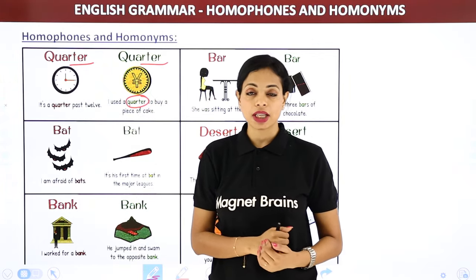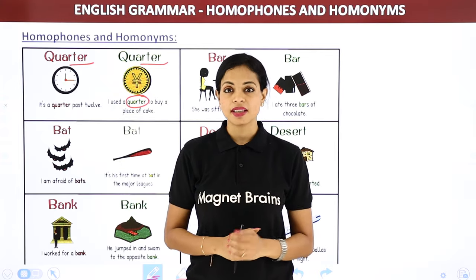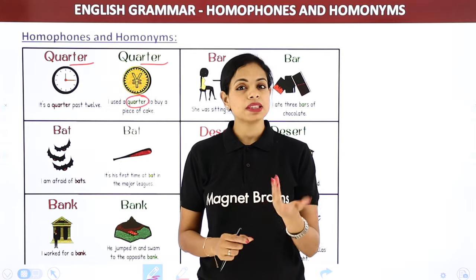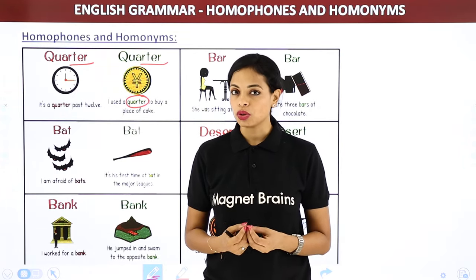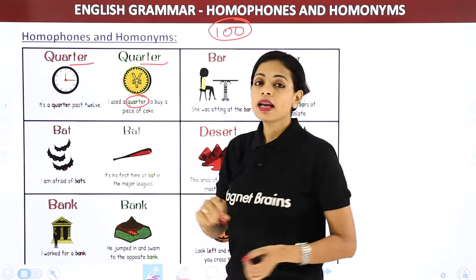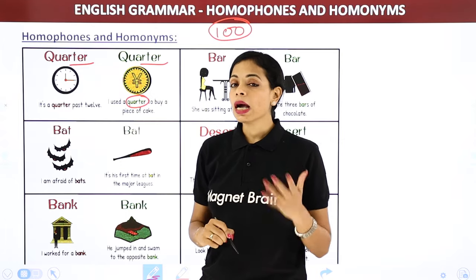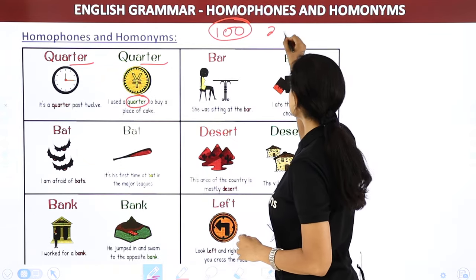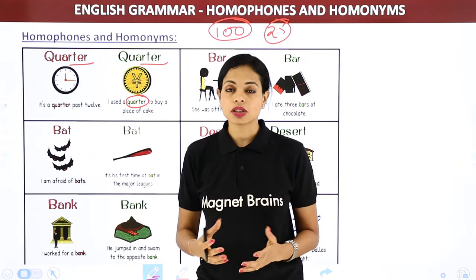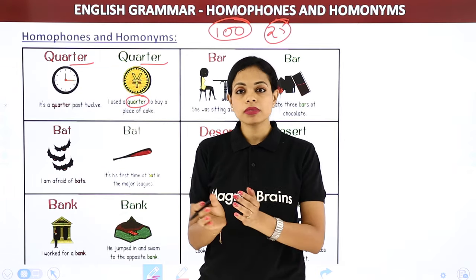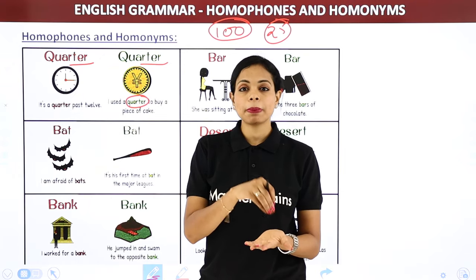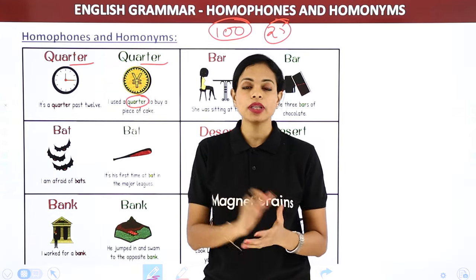'I use a quarter to buy a piece of cake' — here we're talking about currency. A quarter means 25 paise or 25 cents. So if you had 100 rupees and spent a quarter, you spent 25 rupees. Both uses of 'quarter' have the same spelling but different meanings.